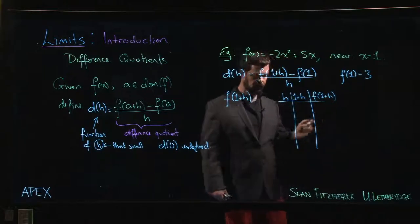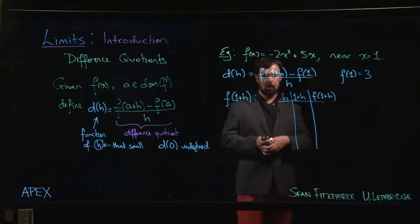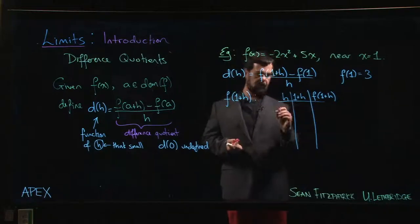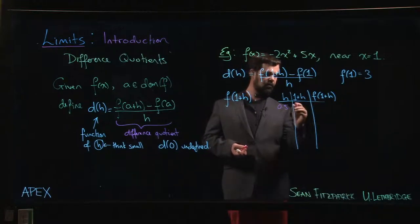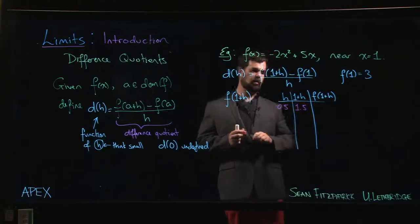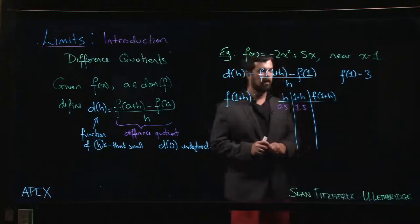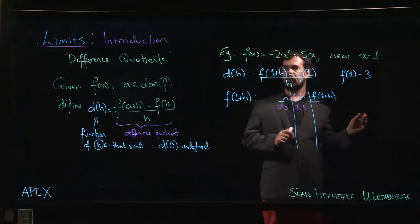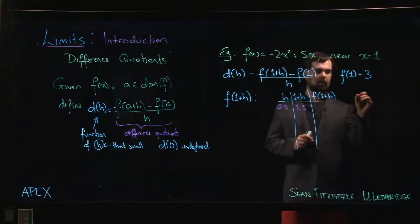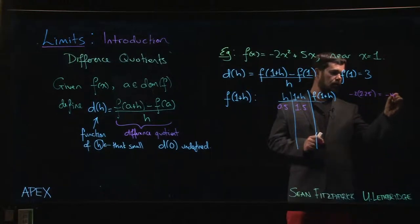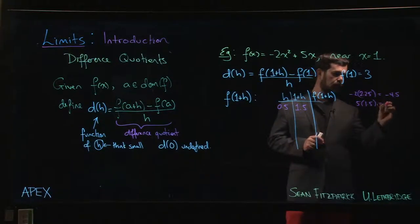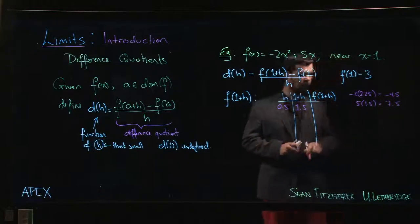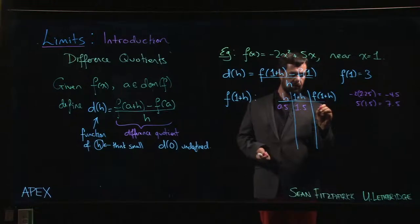So maybe we go with, let's say, a half—it's close to 0 but not too close. So of course, 1+h, we add 1, we're at 1.5. Okay, so if we take that 1.5 and plug it into our function, well, we've got to do a little bit of work here. So 1.5 squared is 2.25 times -2, so that is -4.5. 5 times 1.5 is going to be 7.5, and so we add those up and we get 3.